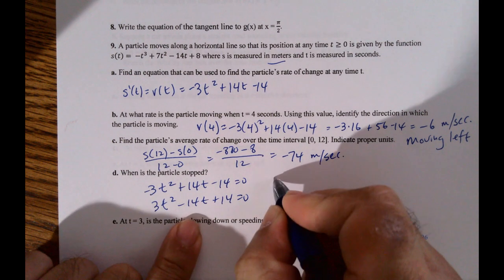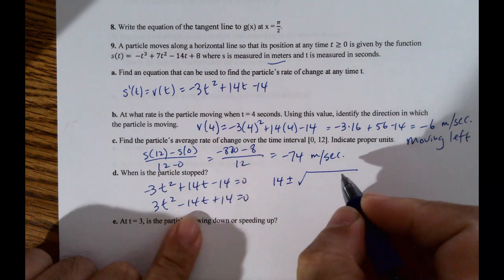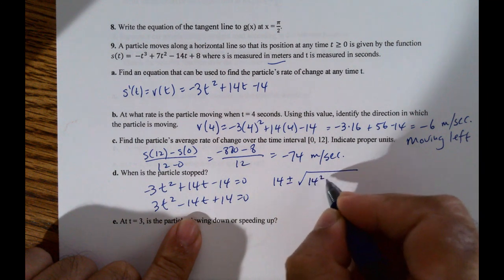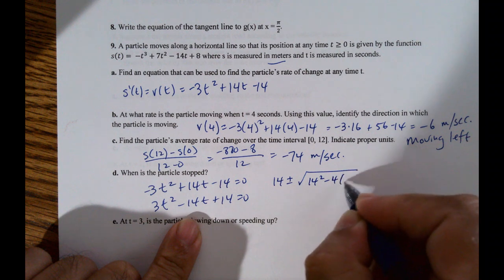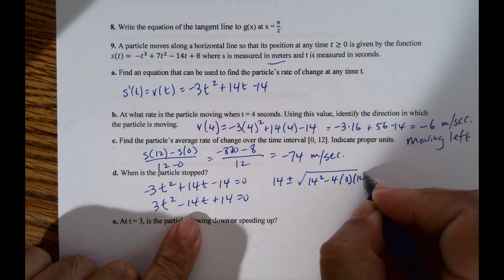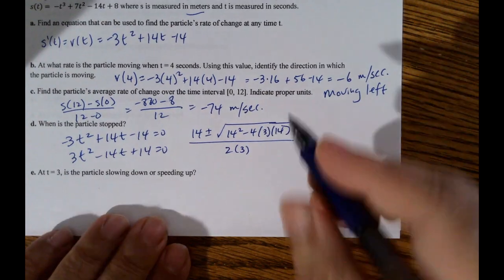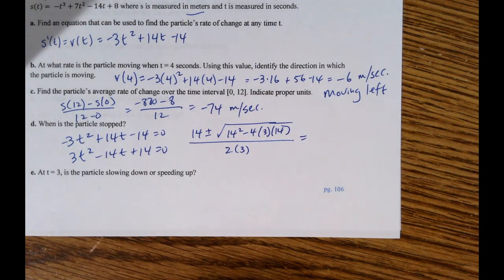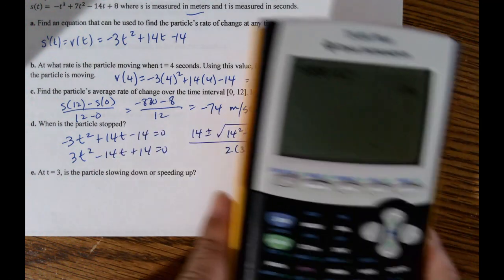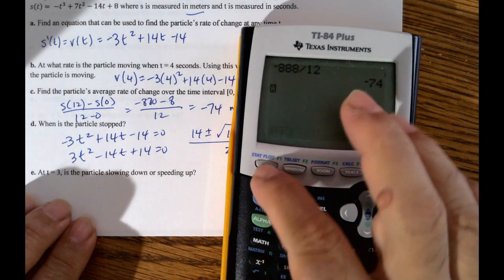So it's the opposite of b, plus or minus the square root b squared minus 4ac, all over 2 times 3. Using the quadratic formula. Put that puppy in the calculator.